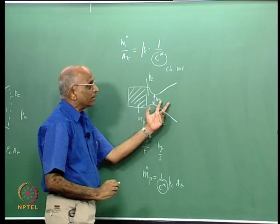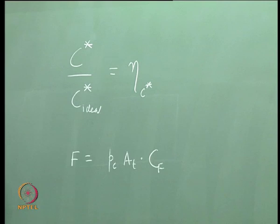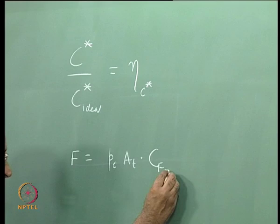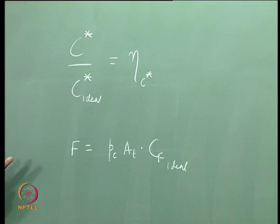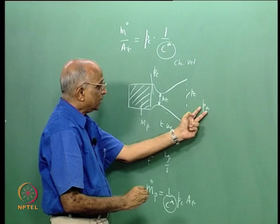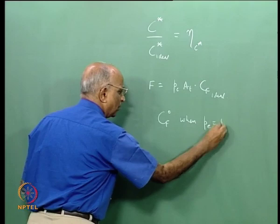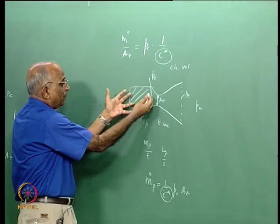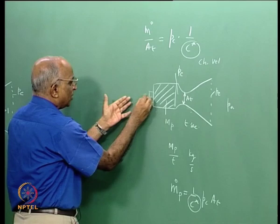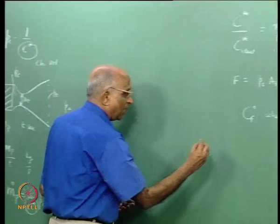We also said I can write the thrust of a nozzle in terms of chamber pressure Pc, throat area At, and a coefficient. We derived the equation for this coefficient, called Cf ideal. The thrust need not always be maximum — thrust is maximum when Pe equals Pa. We called this ideal thrust coefficient Cf0 when exit pressure equals Pa. By measuring actual thrust from an experiment, I can get the actual Cf and compare it to the ideal — that ratio is the thrust correction factor ηf.